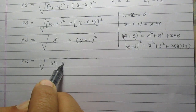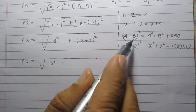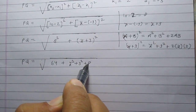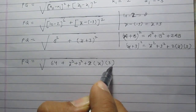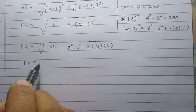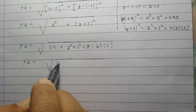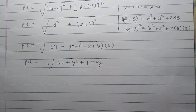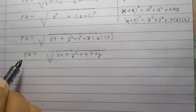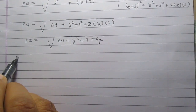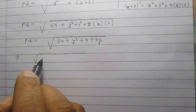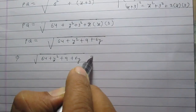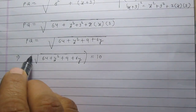So PQ equals the square root of 64 + y² + 9 + 6y. We are given that the distance PQ is equal to 10, so we write: √(64 + y² + 9 + 6y) = 10. On squaring both sides, we proceed to simplify.